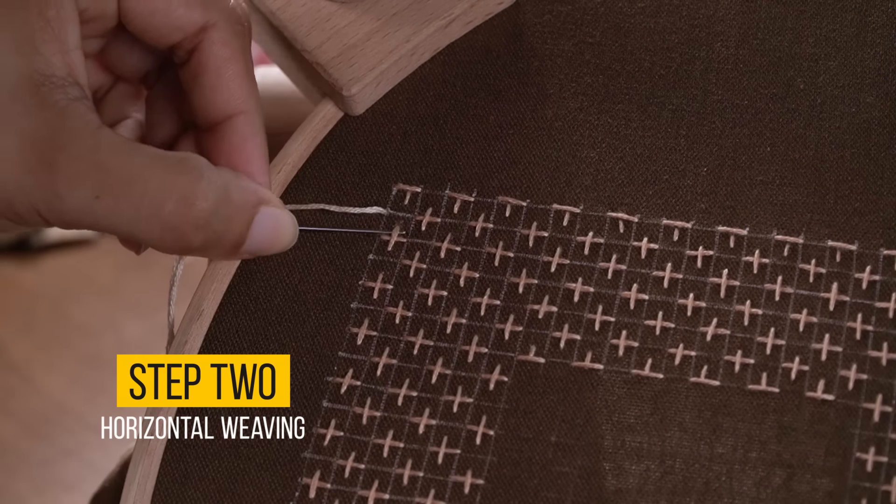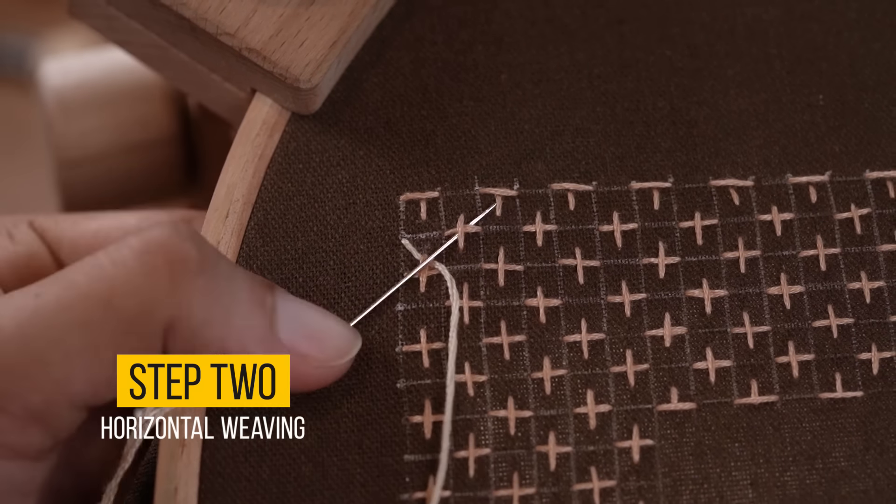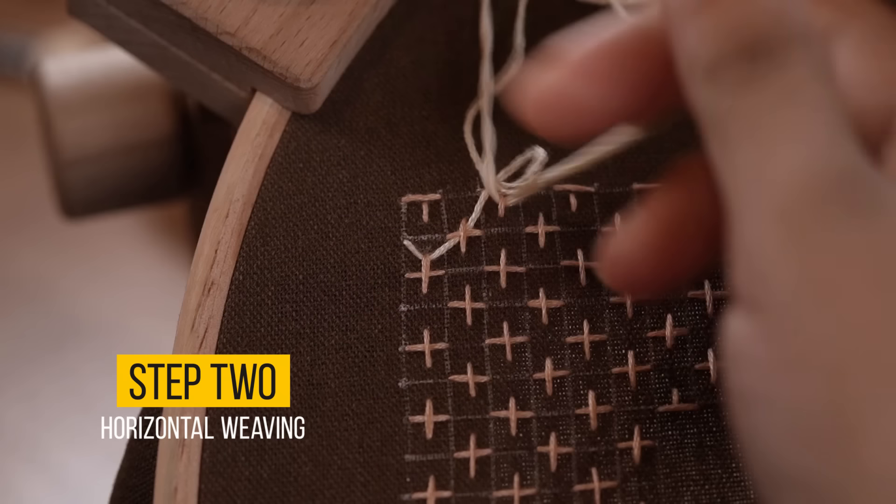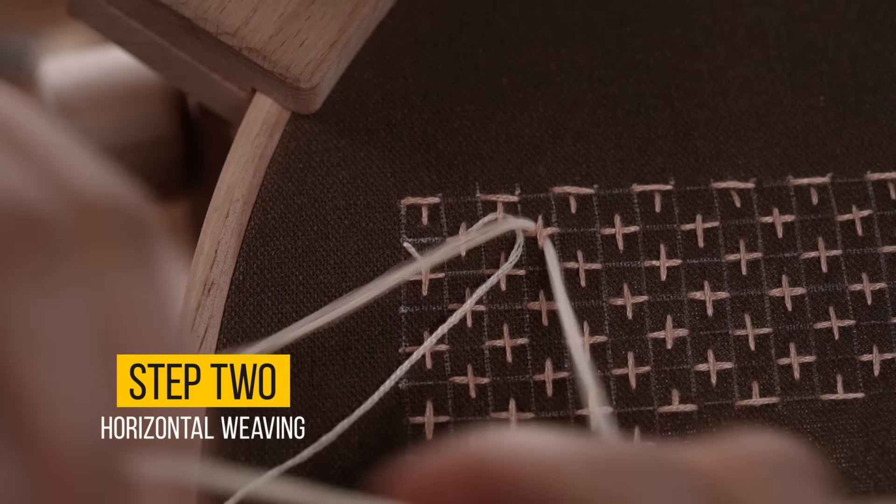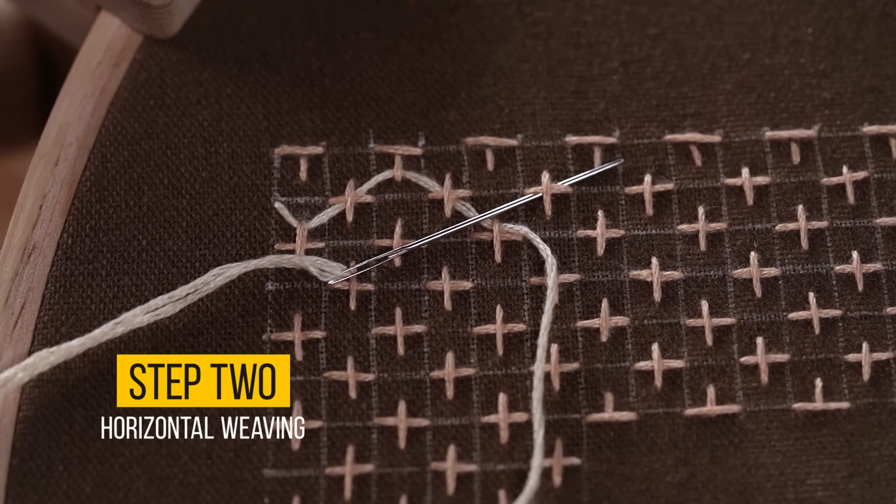Step 2: Horizontal weaving. I'll weave horizontal lines through those cross stitches. Picture it like a loom taking shape. As you complete the horizontal weaving, watch as two petals bloom, adding a captivating layer to our pattern.